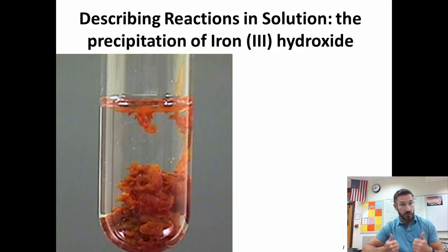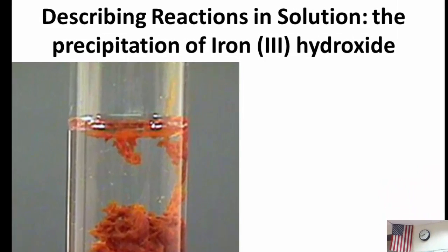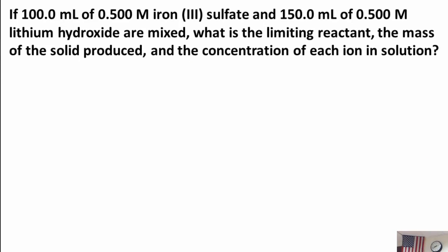Today we're going to talk about how to describe solutions in which you form a precipitate. Specifically, we're going to look at an example where you mix two aqueous solutions and make a precipitate of iron(III) hydroxide. Here's our problem: we have 100 mL of 0.5 M iron(III) sulfate and 150 mL of 0.5 M lithium hydroxide. We want to know the limiting reactant, the mass of the solid produced, and the concentration of each ion in solution after the reaction — which is why we're going to use a RICE table.